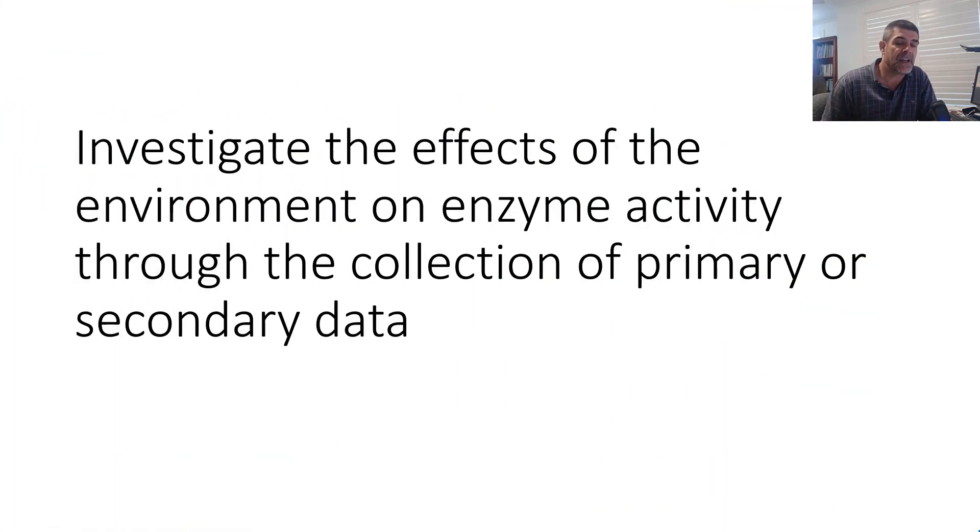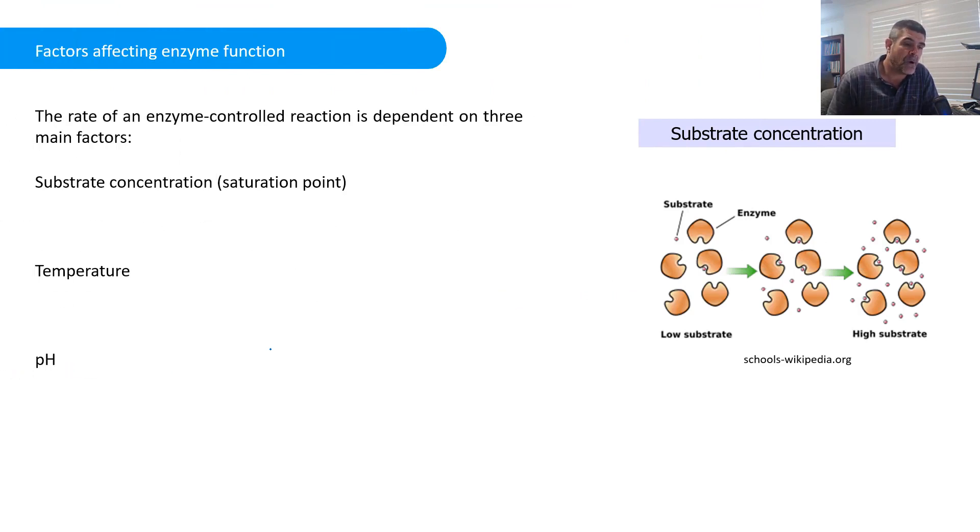Specifically, what you're asked to do is investigate the effect of environment on enzyme activity through the collection of primary or secondary data. It's important that you've had the opportunity to work through some primary data to look at factors that you chose to vary and how they impacted on enzyme activity. We couldn't investigate all factors in class, so we have to look at some secondary data as well. Hopefully by now most of what we're going to look at in this video is familiar to you.